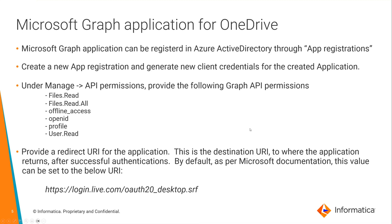A Microsoft Graph application is an app registration that can be registered in Azure Active Directory. To create a Microsoft Graph application for OneDrive, create a new app registration in Azure Active Directory and generate new client credentials for the created application. When the application is created, a client ID is associated to it by default, and you will need to generate a new client secret for the same.